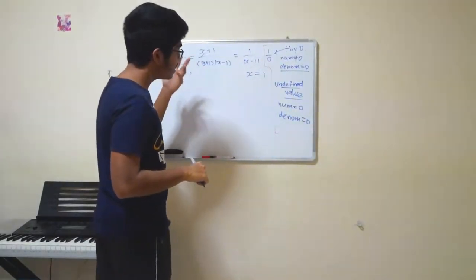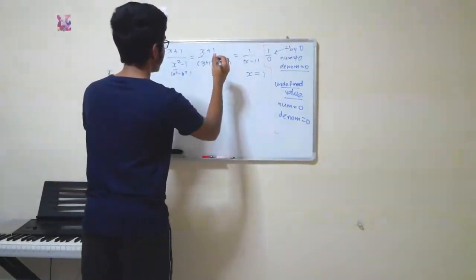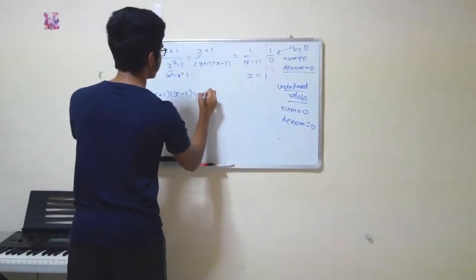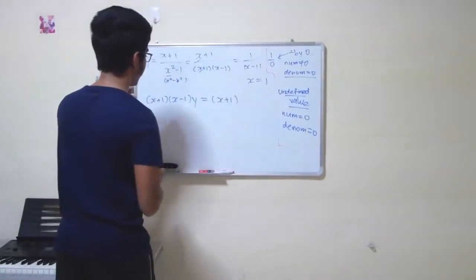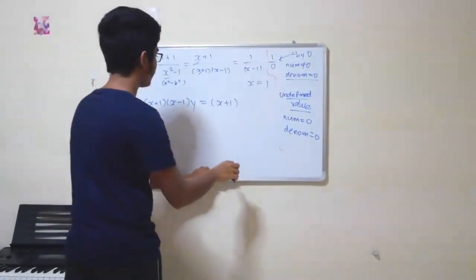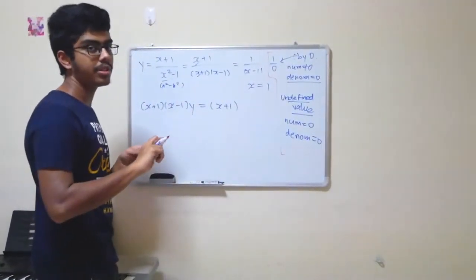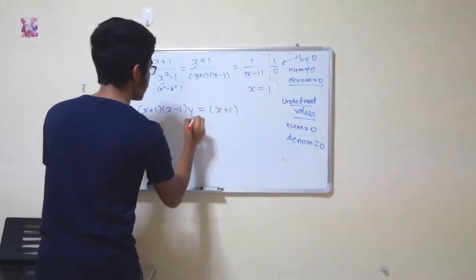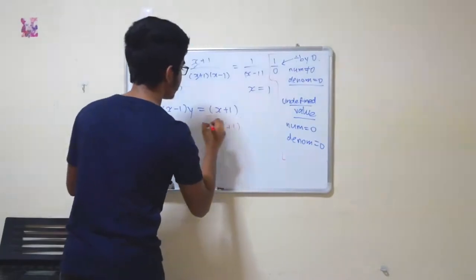So guys, let's try to analyze together this equation. Let's bring the denominator over. x plus 1, x minus 1, y, which is very obvious. You get this, correct? Now what are you doing when you are cancelling, which you must understand, is that you are dividing both sides by the term you are cancelling, which is x plus 1.